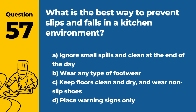Question 57. What is the best way to prevent slips and falls in a kitchen environment? a. Ignore small spills and clean at the end of the day. b. Wear any type of footwear. c. Keep floors clean and dry and wear non-slip shoes. d. Place warning signs only. Answer c. Keep floors clean and dry and wear non-slip shoes. To prevent slips and falls in a kitchen, it's crucial to keep the floors clean and dry, and to wear non-slip shoes for better traction.